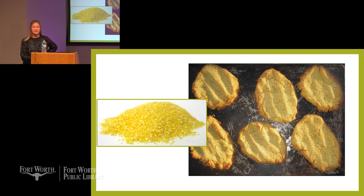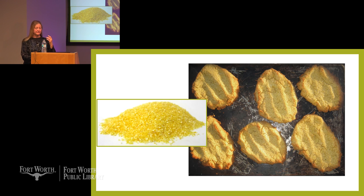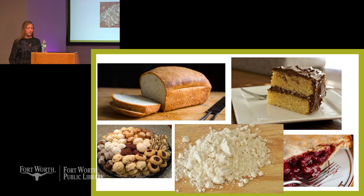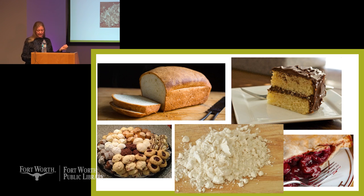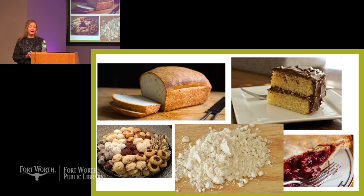Cornmeal is wonderful stuff — corn is easy to process, will last forever before it's processed, though once made into cornmeal it spoils pretty easily. It's extremely adaptable, nutritious, tastes good — but it doesn't have gluten in it. Wheat can grind down almost to the fineness of powder, almost like silk, and it has gluten, so it can do all kinds of things that corn flour can't.